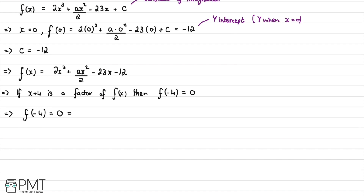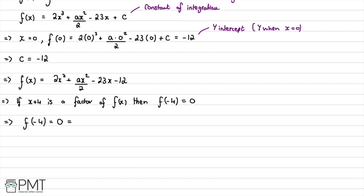Looking at our equation, we substitute in: 2(-4)³ + a(-4)²/2 - 23(-4) + (-12) = 0.